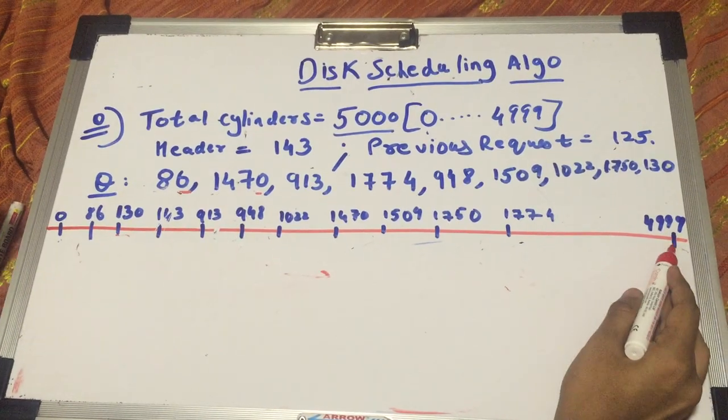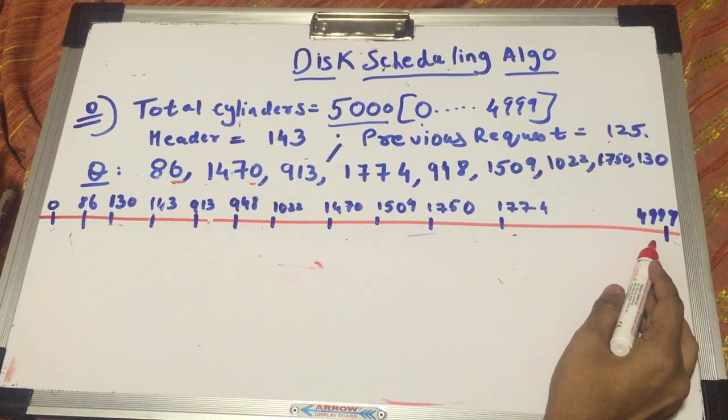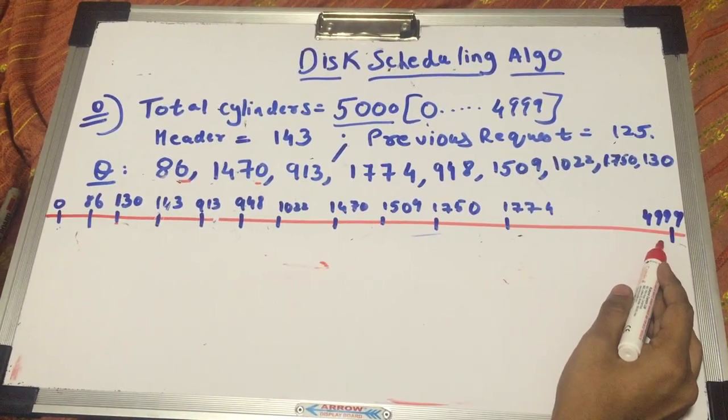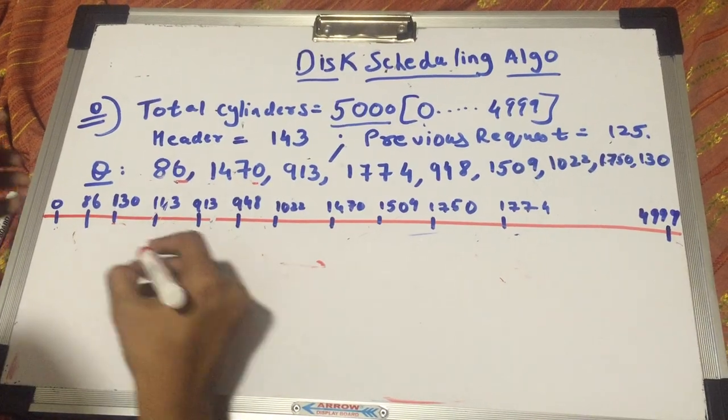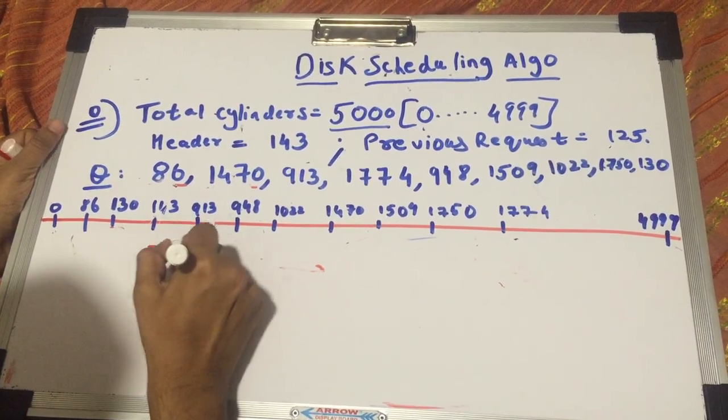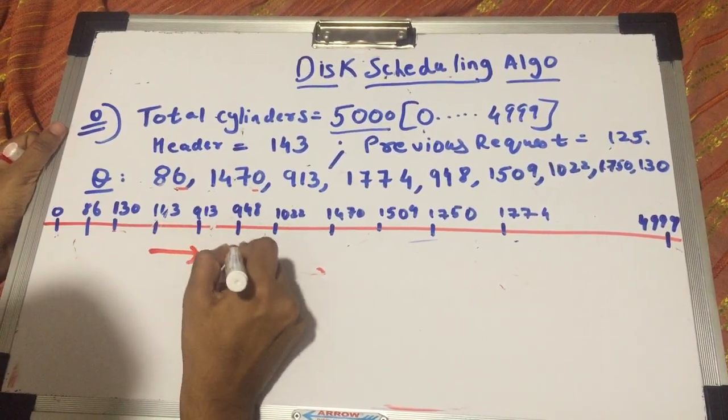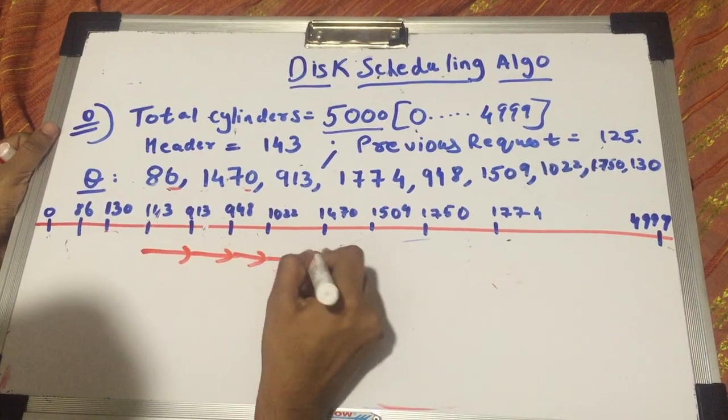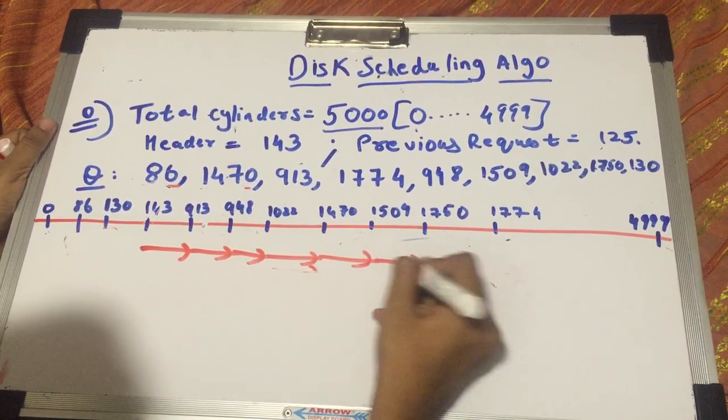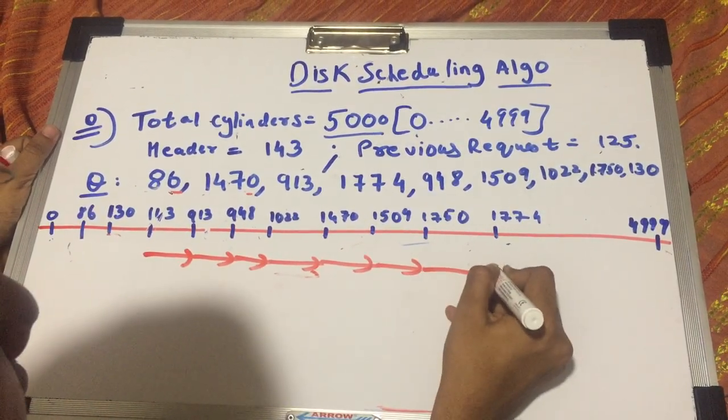That is, we avoid going up to 4999. Okay, so in this we start at 143. We go to 913, 948, 1022, 1470, 1509, 1750, 1774.